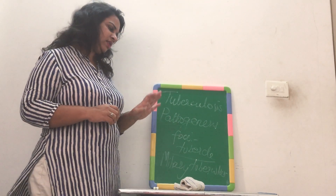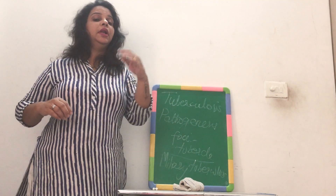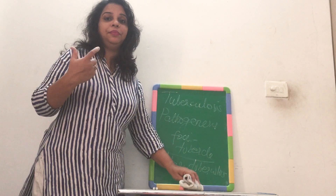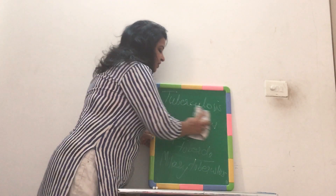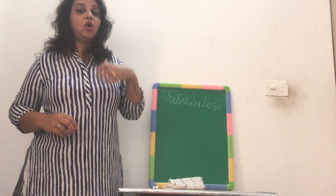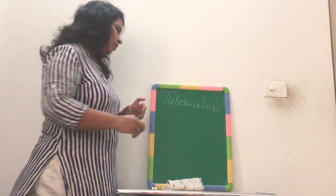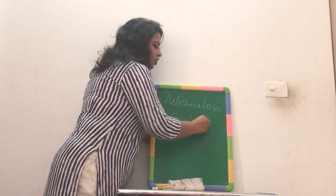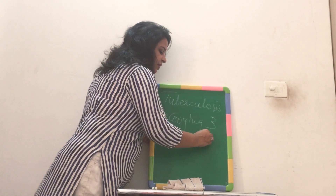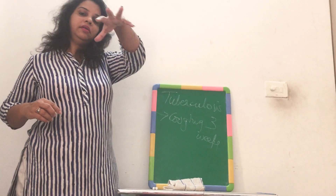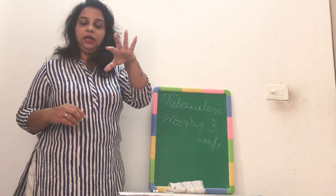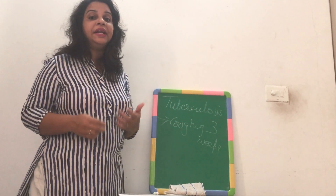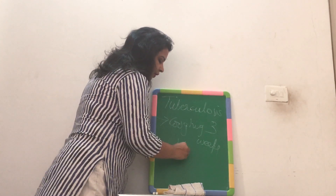Pathogenesis is easy to understand, similar to typhoid fever. Now looking at symptoms: since the disease spreads through coughing and sneezing, the most common symptom is continuous coughing lasting about 3 weeks. If the disease has spread over a larger area of the respiratory system, this cough is accompanied with blood and mucus.